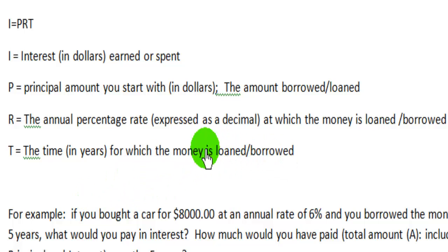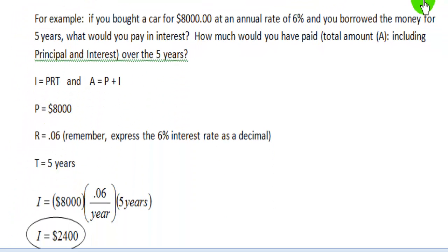So, let's look at the example. The example was we bought a car for $8,000 at an annual rate of 6%, and you borrowed the money for five years. What would you pay in interest, and how much would you have paid the total amount? We're going to call that A, and I want you to always remember A for this type of problem means total amount borrowed. And note that A is just the principal that you borrowed, plus the interest that you paid. So, I equals PRT, and once you know I, you can say that A equals P plus I.